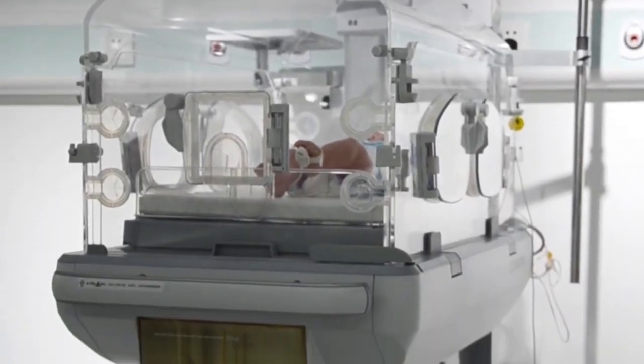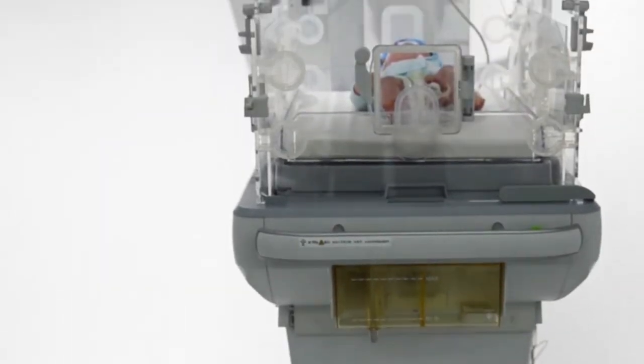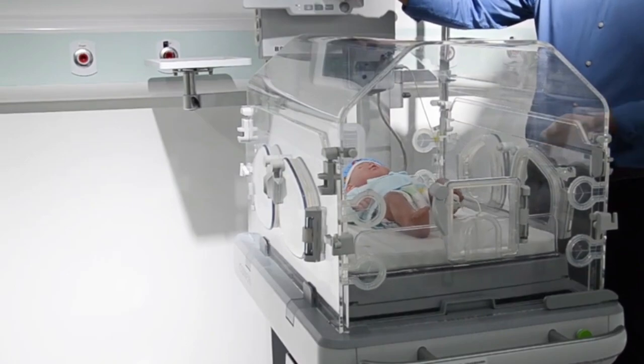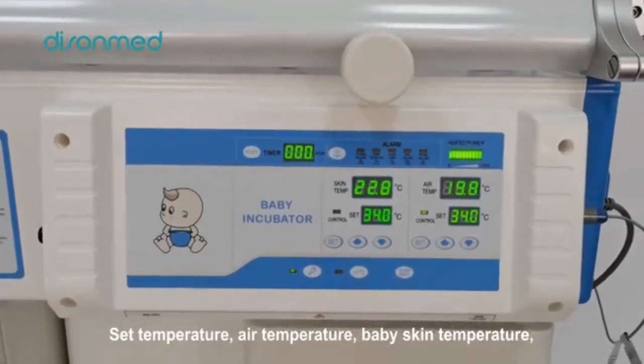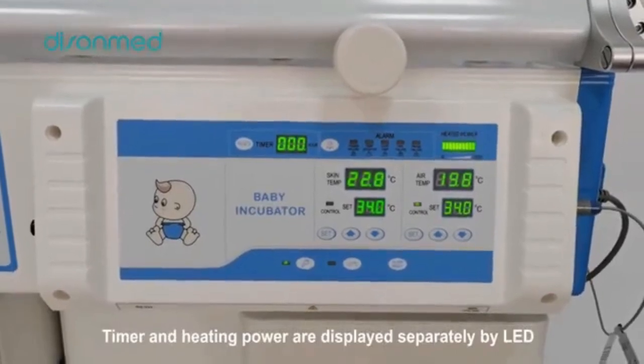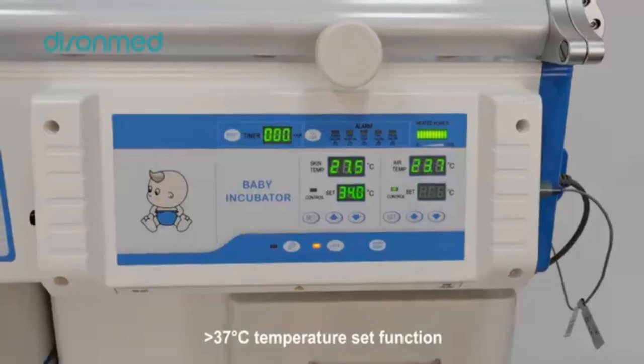Double wall incubator. This type has a double wall system for even more protection from heat and moisture loss. Servo control incubator. This incubator can be programmed to adjust the temperature and humidity level based on sensors that are attached to the baby.